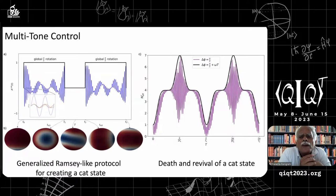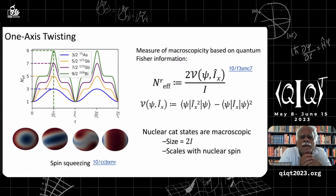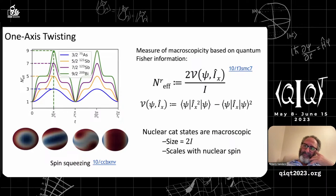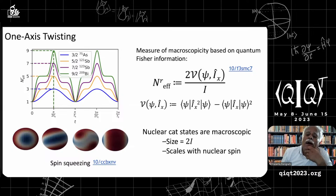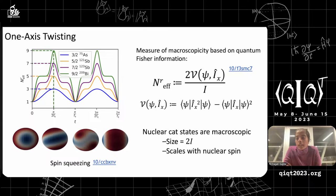Another question: Pragati appeared to be calculating variance — why call it Fisher information? Pragati answers: for pure states, quantum Fisher information reduces to the variance. As long as we are not explicitly talking about decoherence and mixed states, Fisher information can be expressed in terms of the variance.